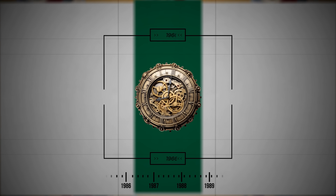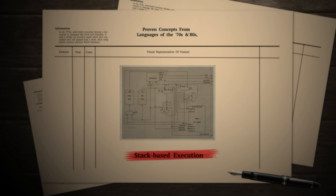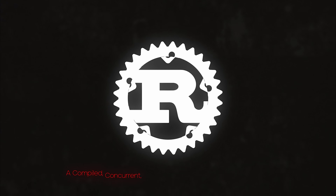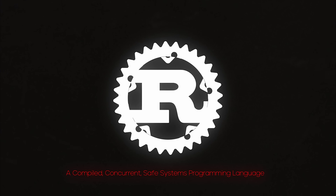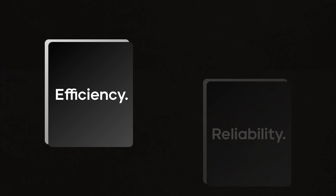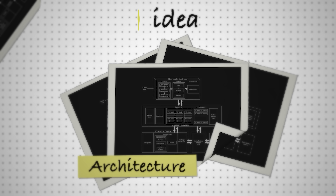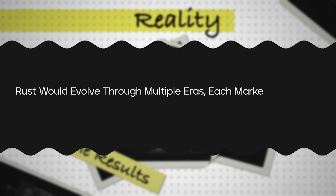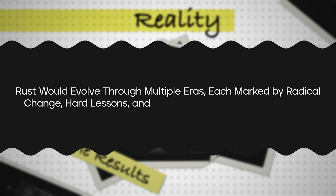He revisited proven concepts from languages of the 70s and 80s and revived them with fresh urgency. He called it Rust — a compiled, concurrent, safe systems programming language, designed to deliver both efficiency and reliability. But the road from idea to reality would stretch nearly a decade, and Rust would evolve through multiple eras, each marked by radical change, hard lessons, and a growing community of believers.